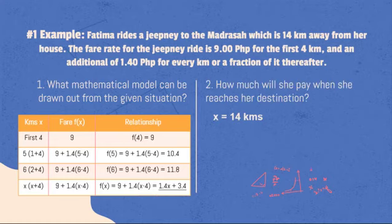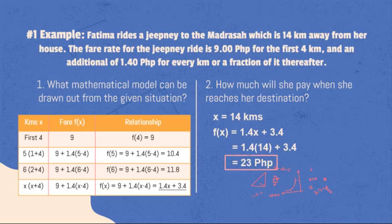Going back to the problem, how much will Fatima pay when she reaches her destination? Using the function f(x) = 9 + 1.4(x - 4), we just have to substitute 14 kilometers as the value of x. After solving, the total fare would be 23 pesos.